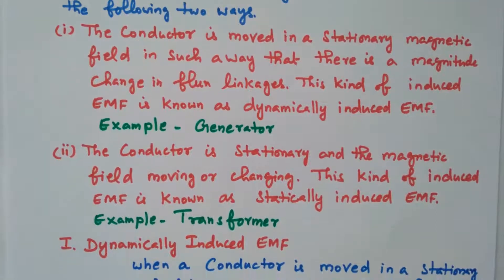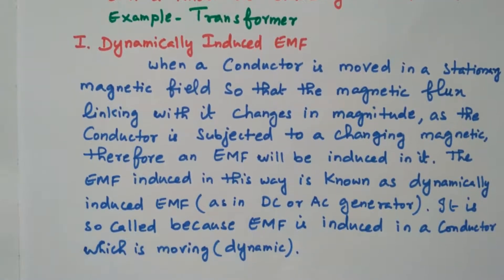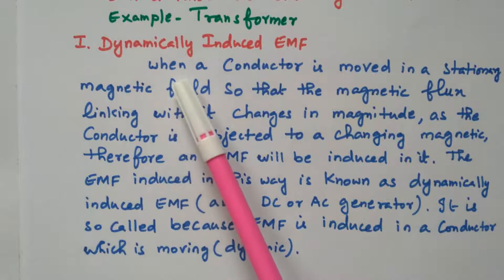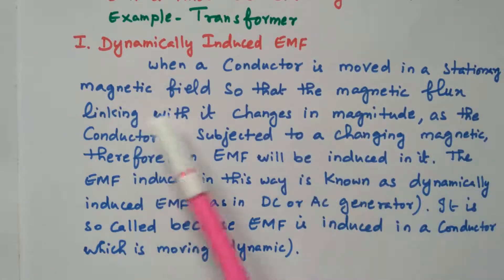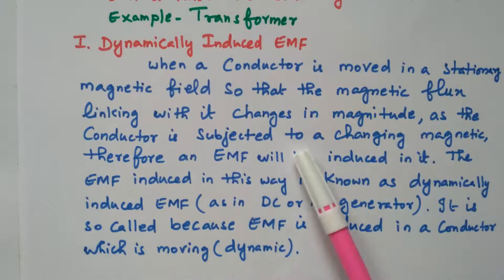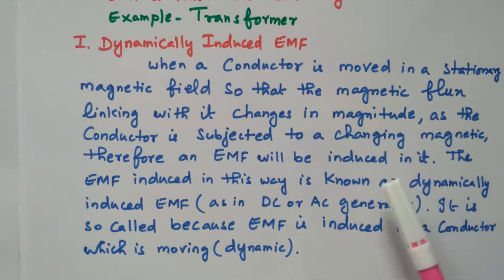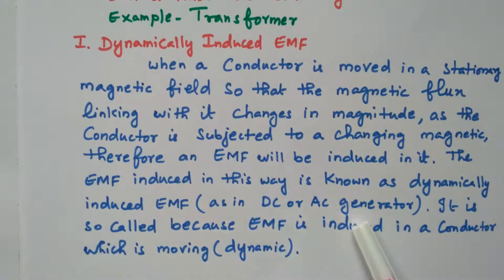Now we will derive expressions for the first and second cases. For dynamically induced EMF: when a conductor is moved in a stationary magnetic field, the magnetic flux linkage changes in magnitude as the conductor is subjected to a changing magnetic field; therefore the EMF is induced. This is termed dynamically induced EMF, as seen in DC generators or motors, because EMF is induced due to conductor movement.